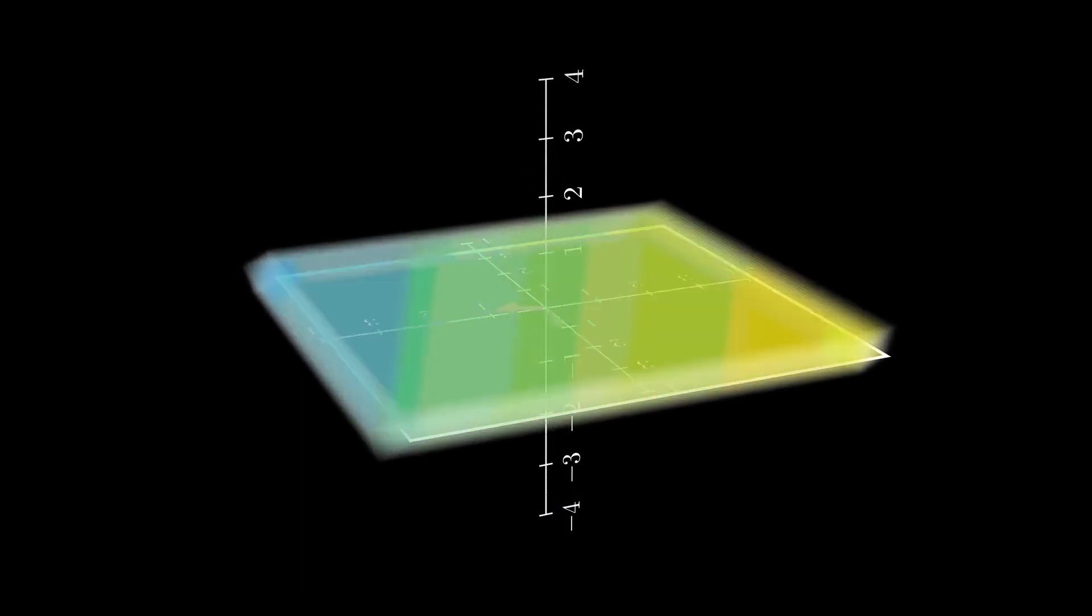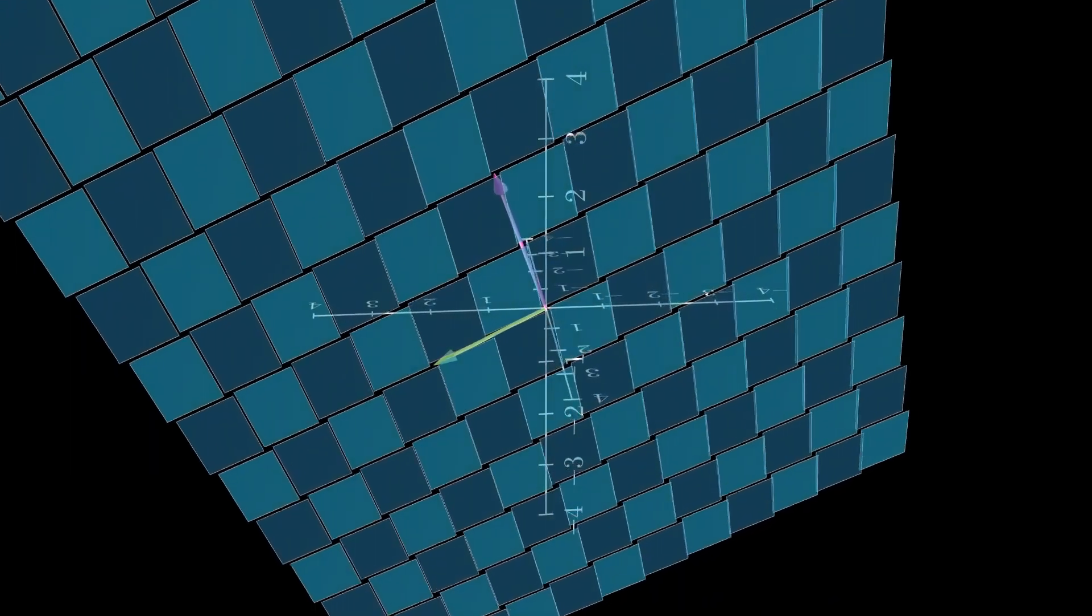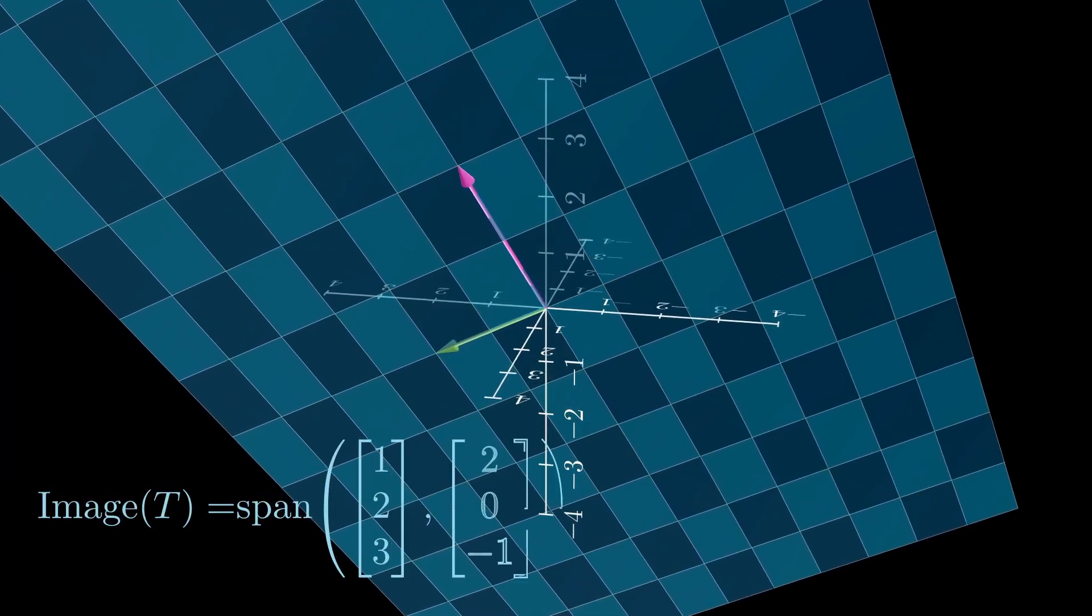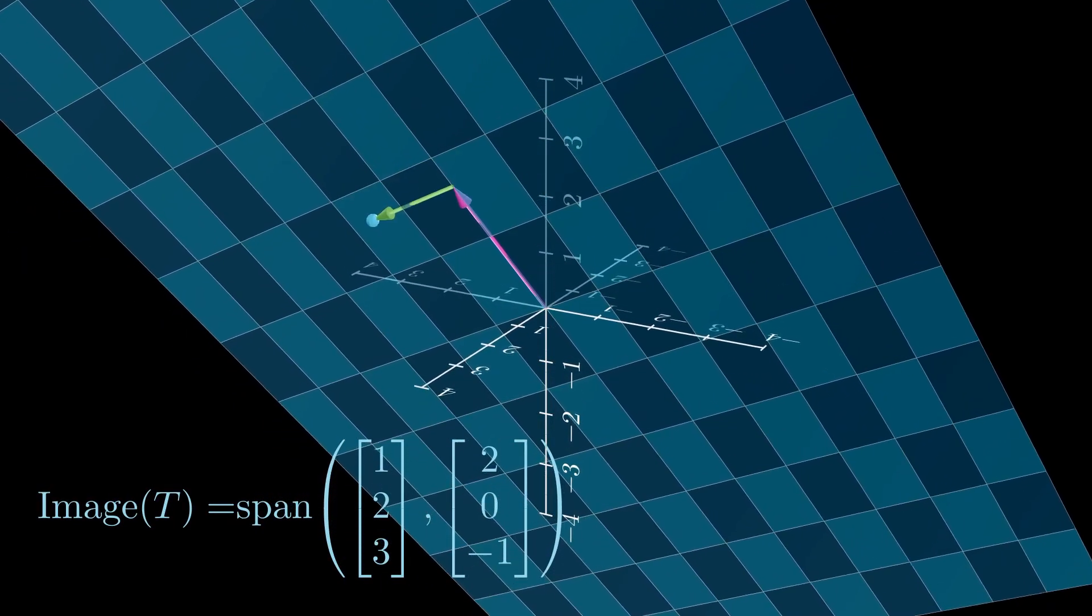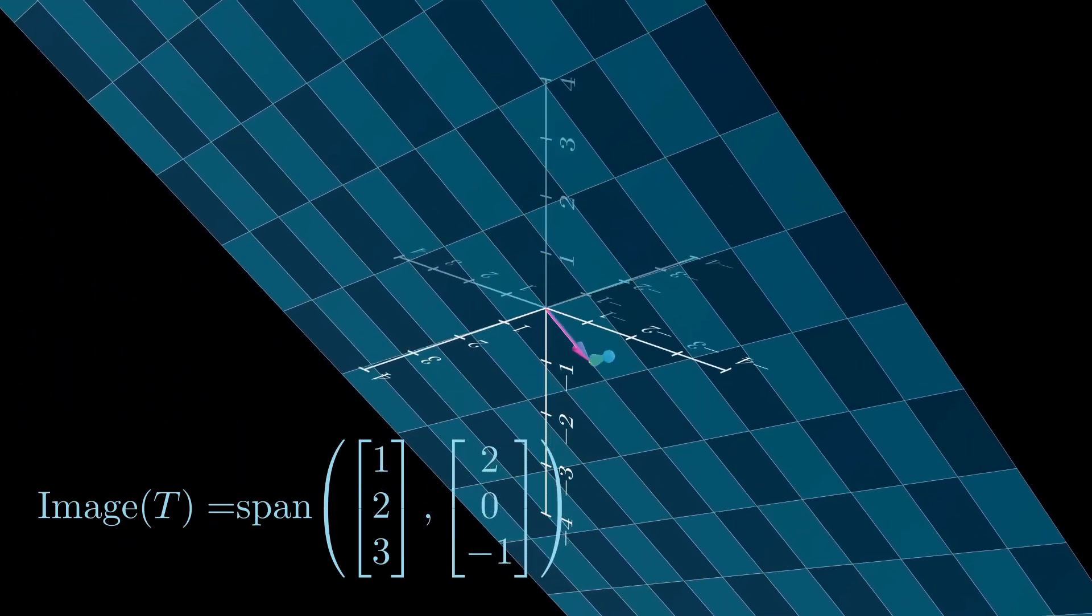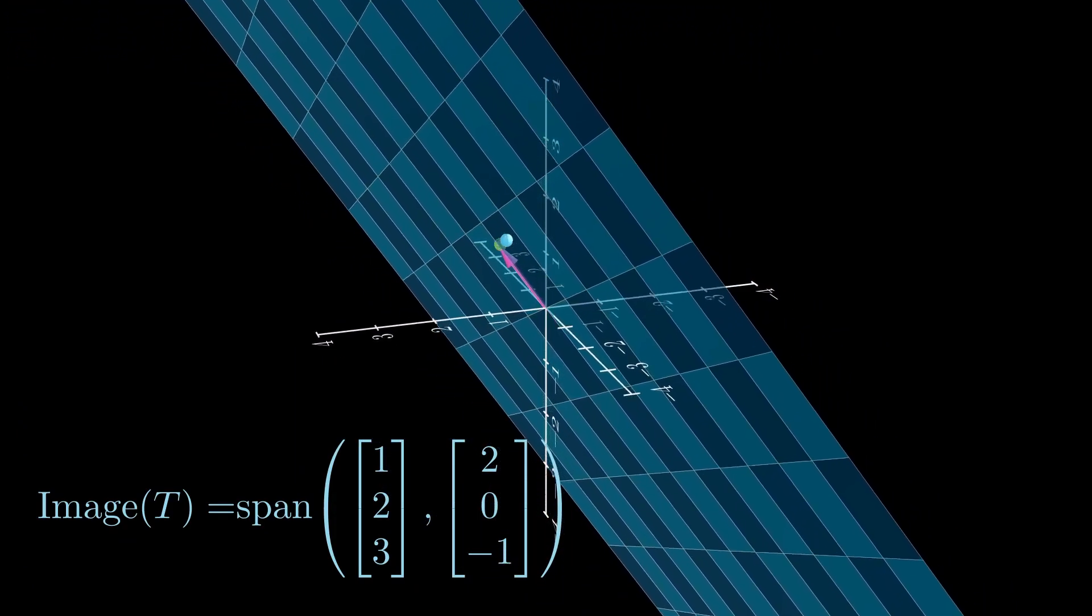Moreover, we see how the output of two highlighted basis vectors correspond to the entire transformation. And this is exactly what we mean when we write down the image of T is equal to the span of two outputs. The image of T is determined by the output of 1-0 and 0-1.